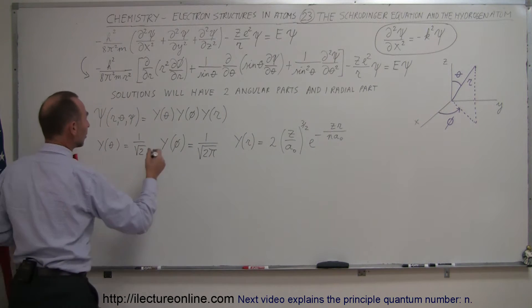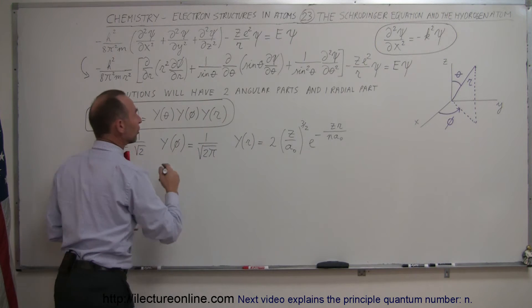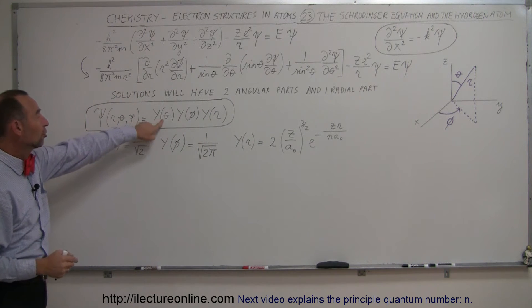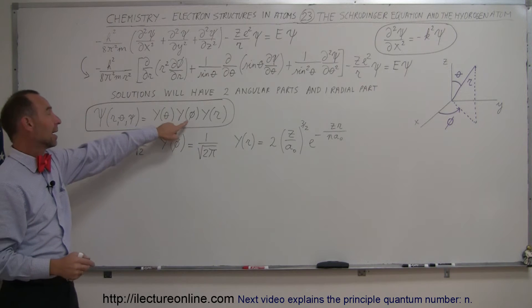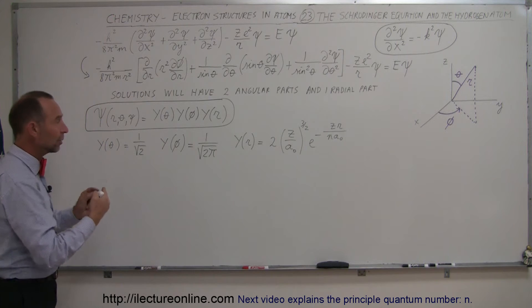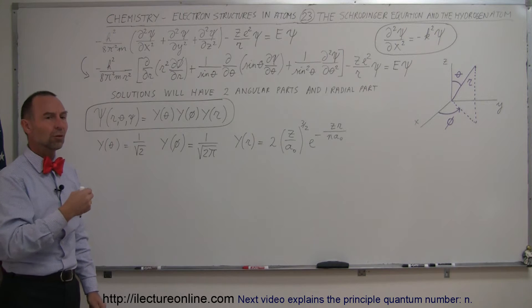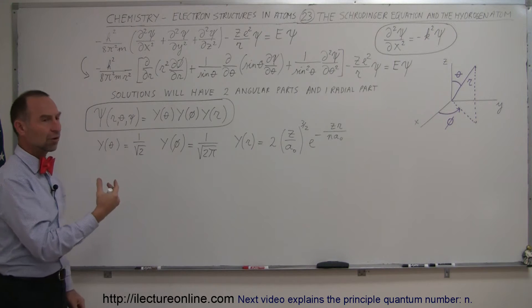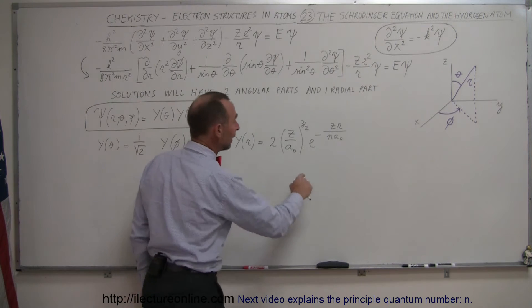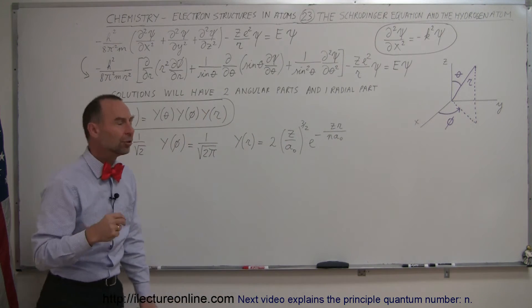It turns out that ultimately the wave equation — the equation that defines the wave pattern of the electron in an atom — is simply the product of the function relative to the theta angle, the function relative to the phi angle, and the function relative to the radial direction. If we multiply those three things together, we have the equation that defines the wave pattern of an electron in an atom. That is also defined by n, which is the energy level, and Z, which is the atomic number of the atom.